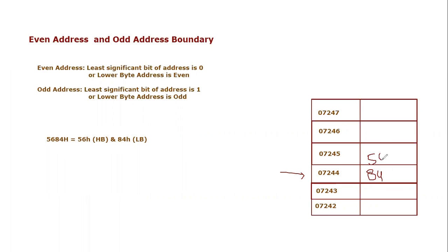Consider the complete address of the word — the address will always be considered from the lower byte. So the lower byte is stored at 07244, and 07244 is an even number. So that means this particular placement is what? Even address boundary. Because the data, or the word, is placed on an even address. I hope you have understood the concept.